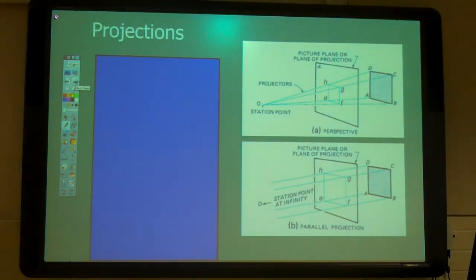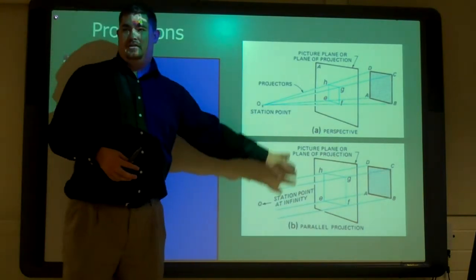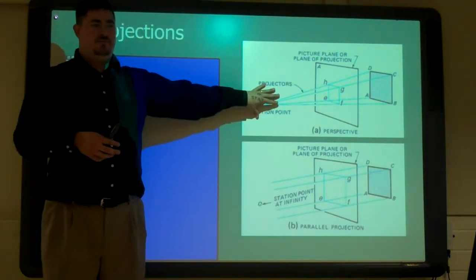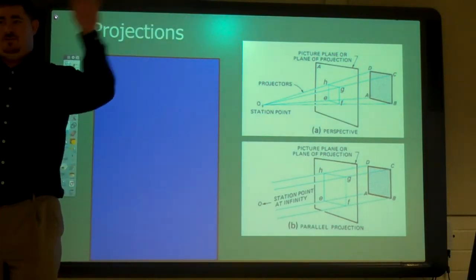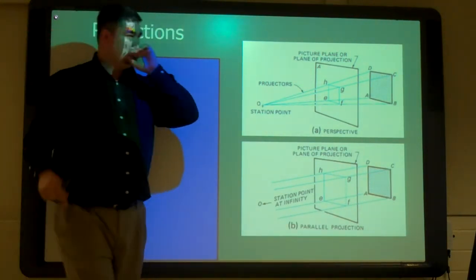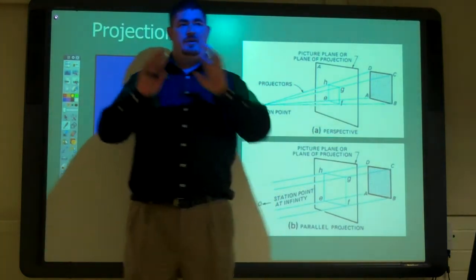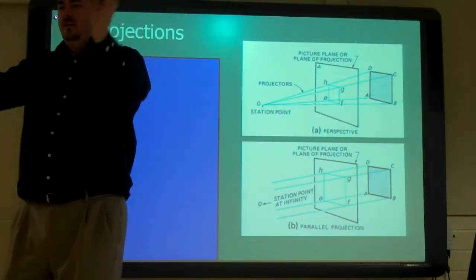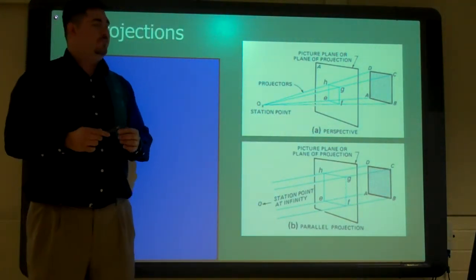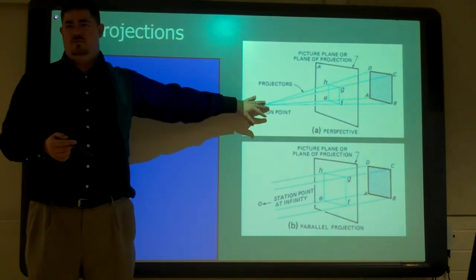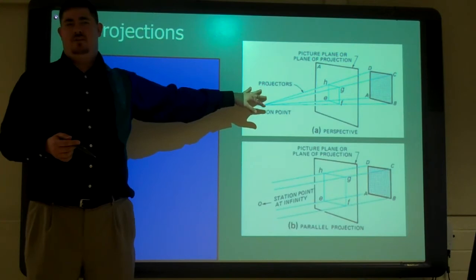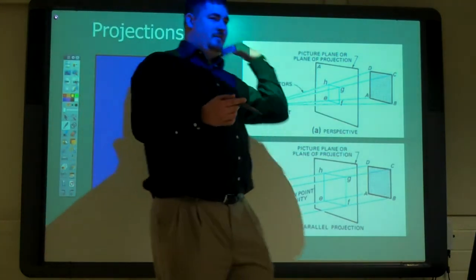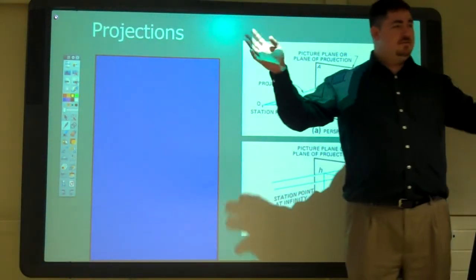In drafting we have two basic types of projections: perspective and parallel projection. Perspective is real life — light comes in towards our eye, it all angles in, and things further away look smaller. Let me step back. Drafting has three main areas: civil, architectural, and mechanical.